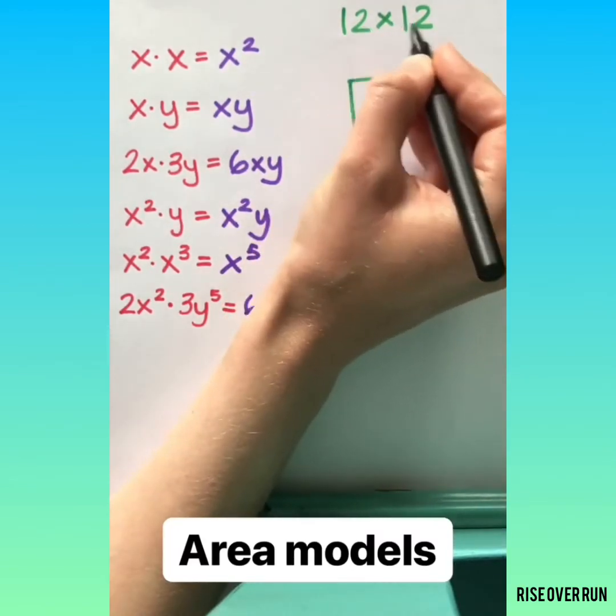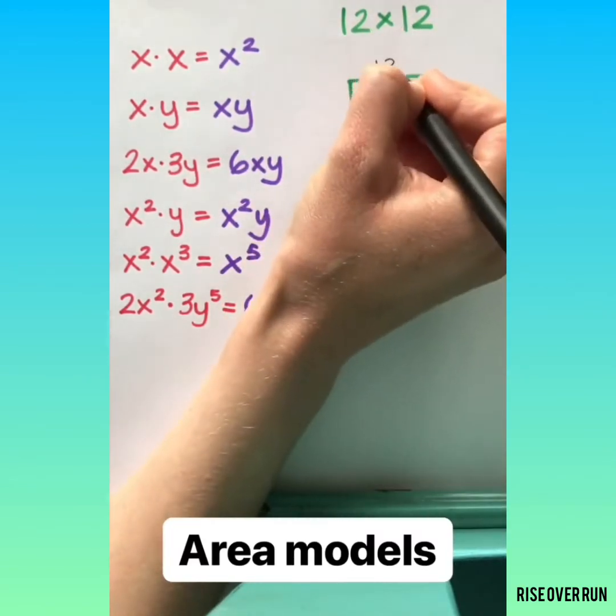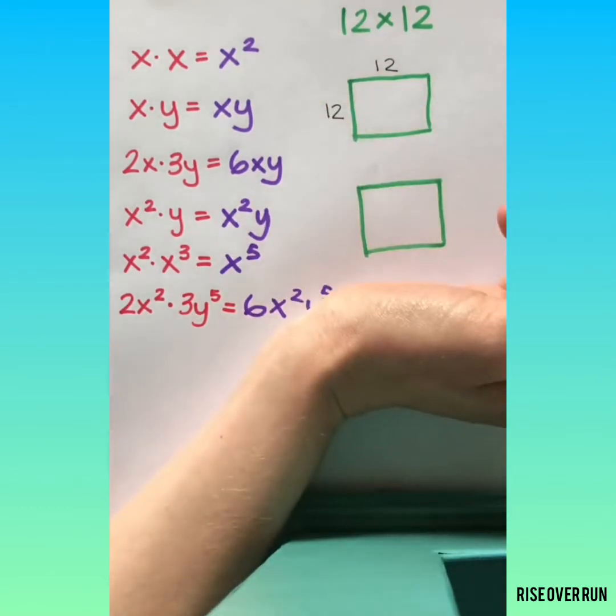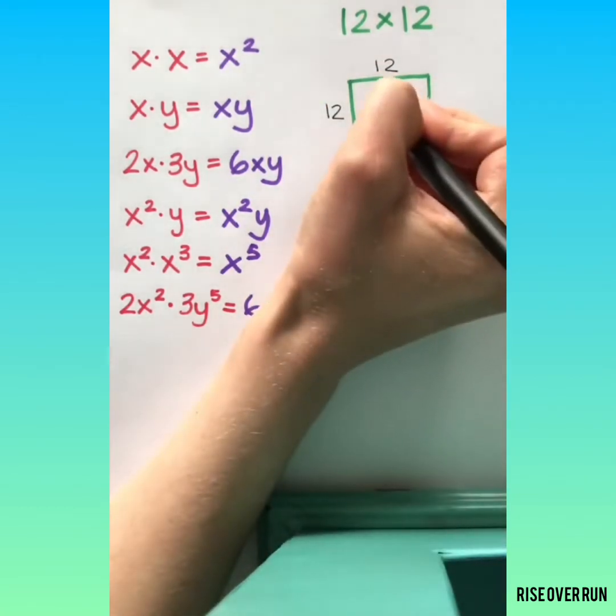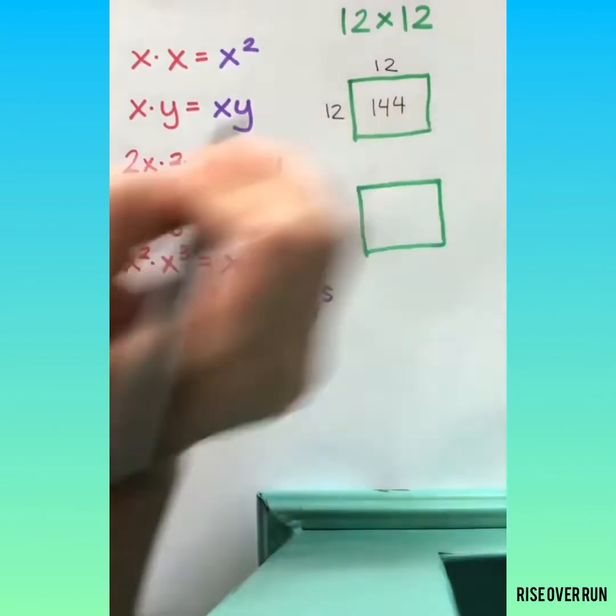If we want to multiply 12 times 12, we can think of it as an area with a length of 12 and a width of 12. If we multiply those, we find the area of 144.